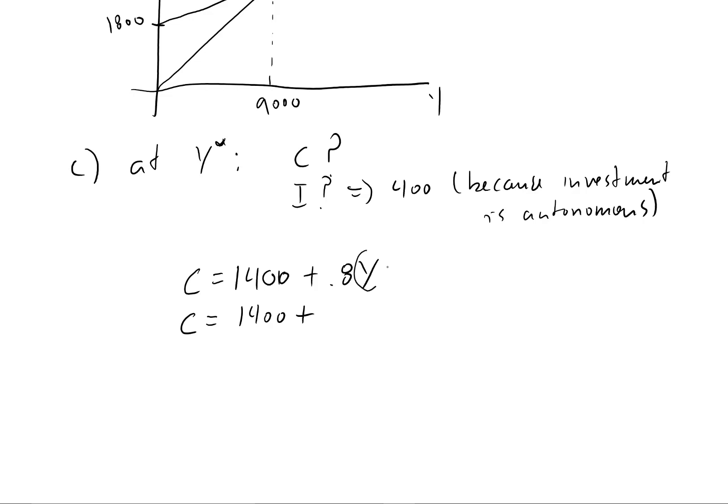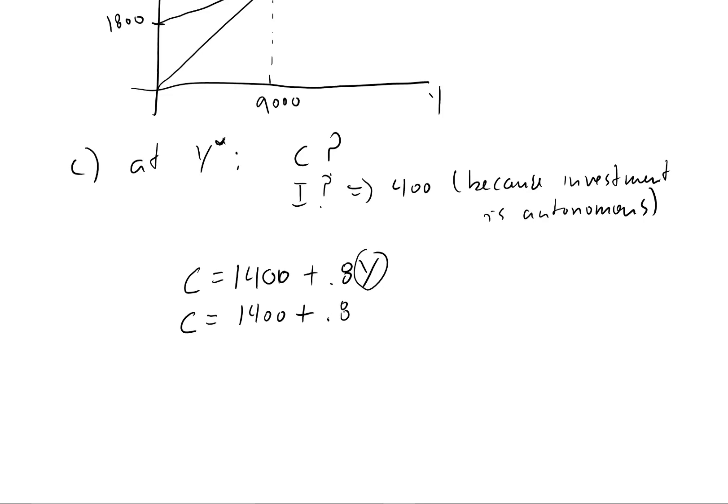So 1,400. Now we're just going to plug in what our equilibrium Y is. So it's asking us about at equilibrium, what is consumption. So 0.8 times 9,000. So 0.8 times 9,000 equals 7,200. So consumption equals 1,400 plus 7,200.